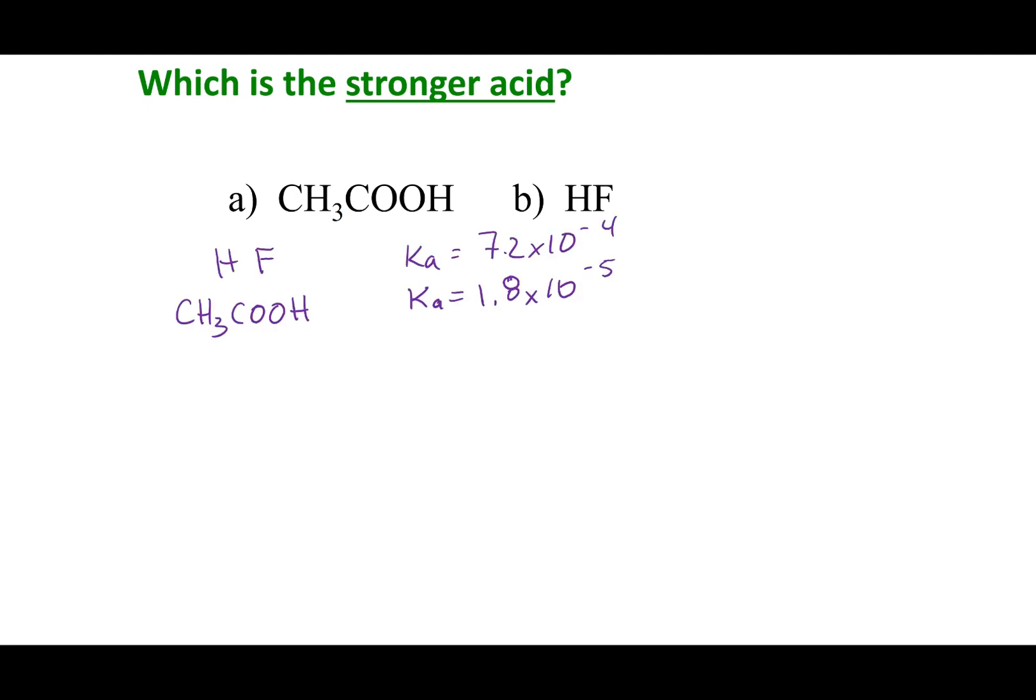Alright, Geno people. What you guys will see is that I've written the Ka's off the Ka table for these two assets. And what you guys will notice is that HF has a bigger Ka value.